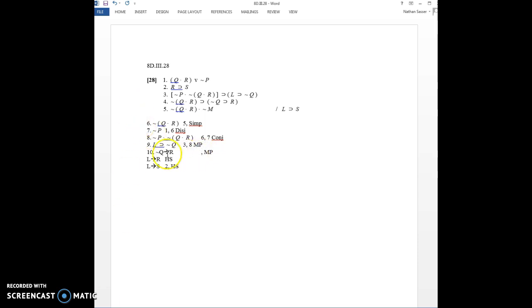So, if not Q then R, I get by an application of modus ponens to line 4. So, I have line 4 and line 6, if I apply modus ponens there, I get if not Q then R. Alright. Now, if I apply hypothetical syllogism to 9 and 10, I get if L then R. And if I apply hypothetical syllogism again to 2 and 11, I get if L then S.